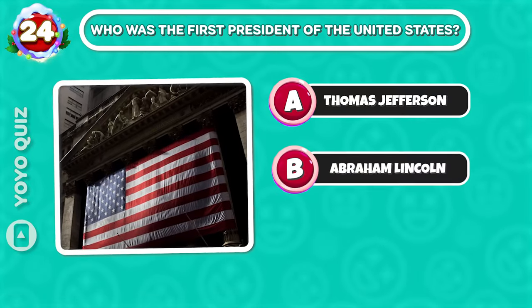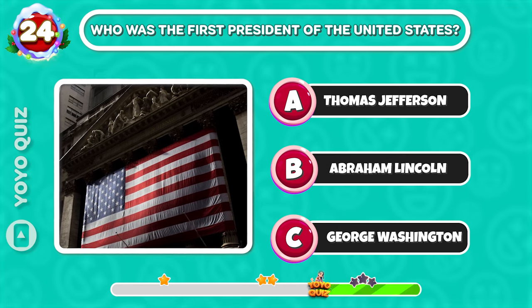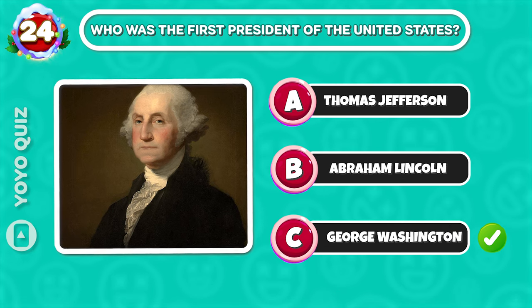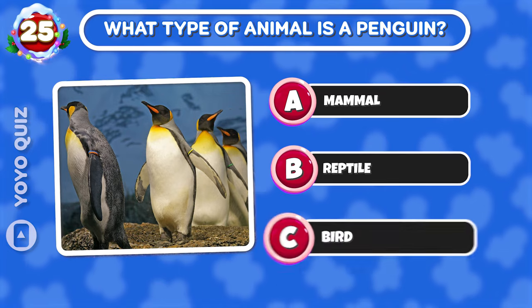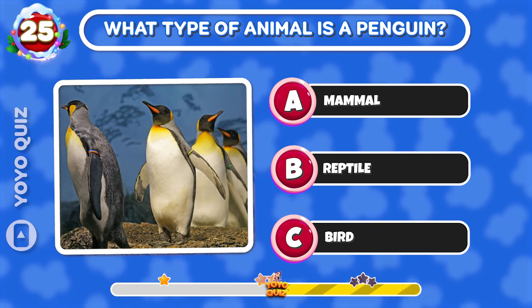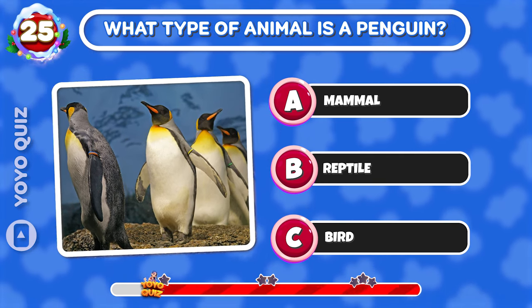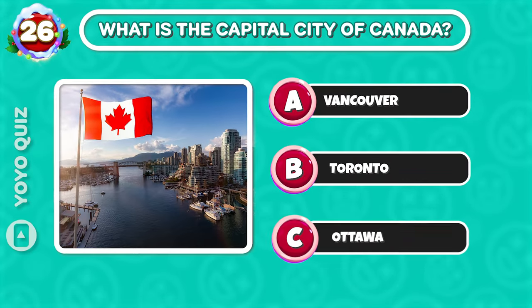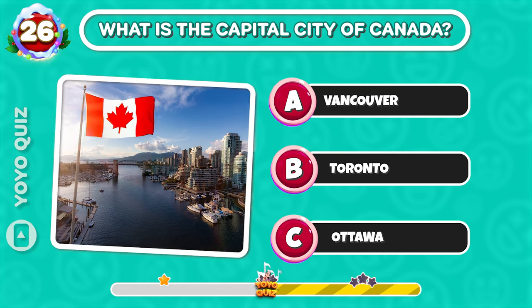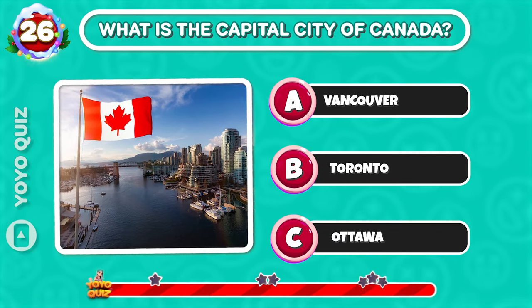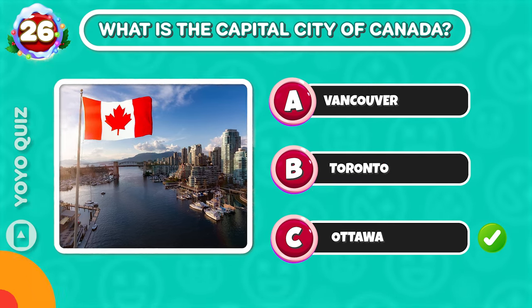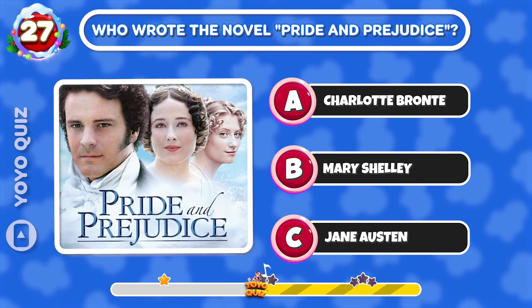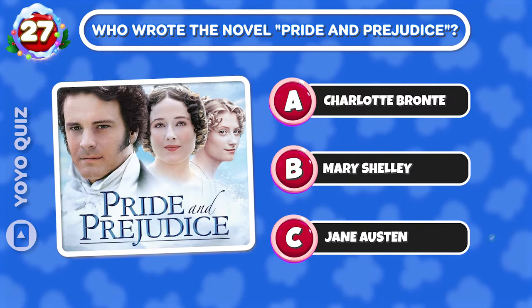Round 22: What does NASA stand for? Brilliant, it's B. Round 23: Who was the first president of the United States? Easy, it's C. Round 24: What type of animal is a penguin? It's C. Round 25: What is the capital city of Canada? C is the correct answer. Round 26: Who wrote the novel Pride and Prejudice? Awesome, it's C.